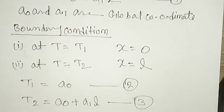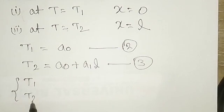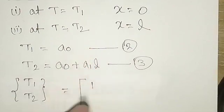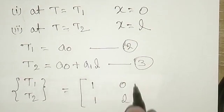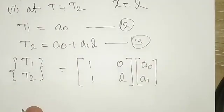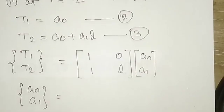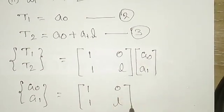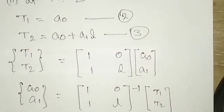From equations 2 and 3, we form the matrix equation with T1 and T2 on the left side. The coefficient matrix is [1, 0; 1, L], multiplied by the column vector [A₀; A₁]. So A₀ and A₁ equal the inverse of [1, 0; 1, L] times [T1; T2].